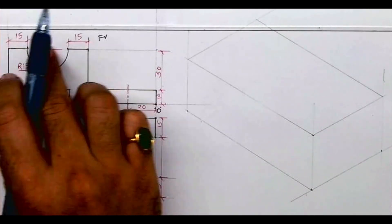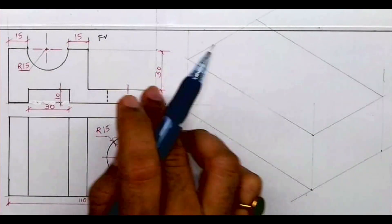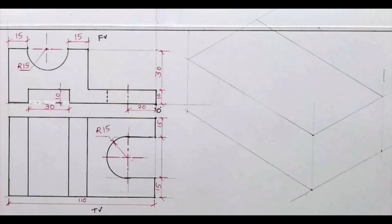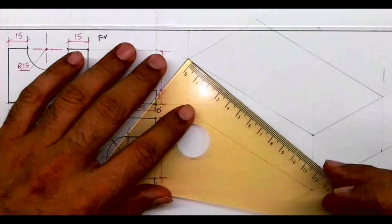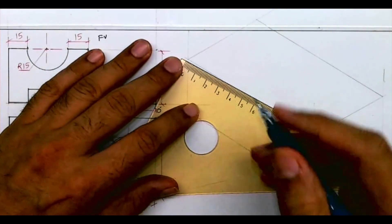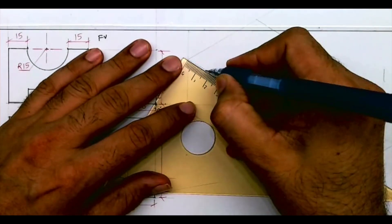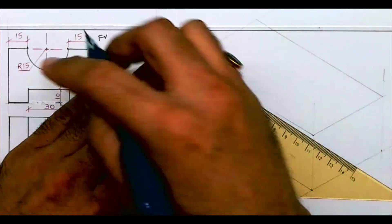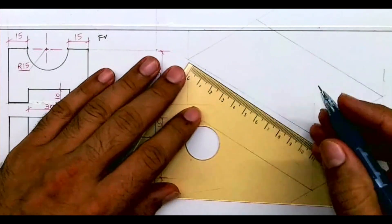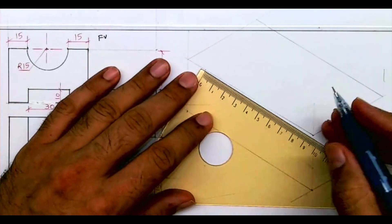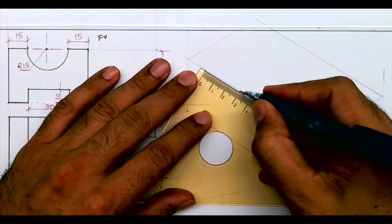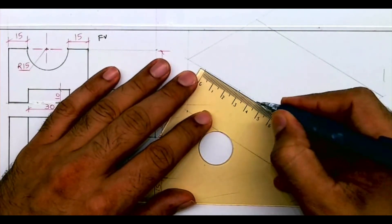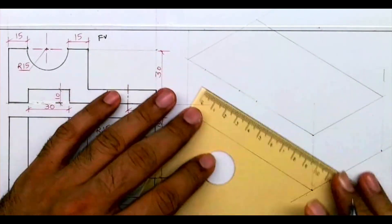So we'll start with the front view. I'll take 15, then 30, then again 15.